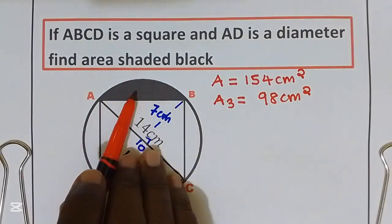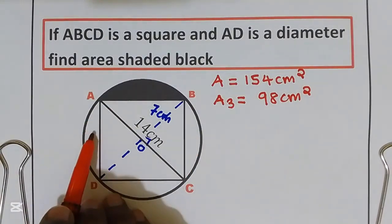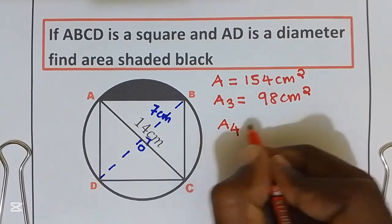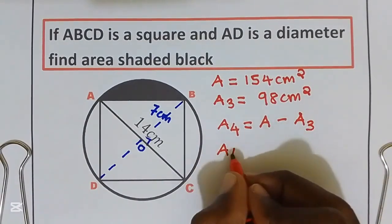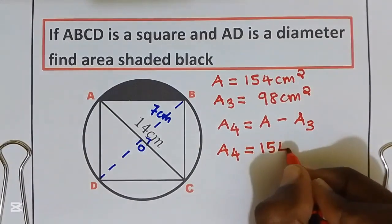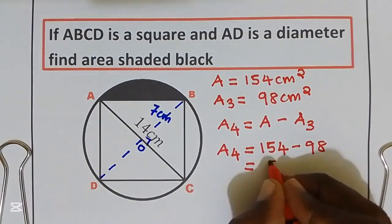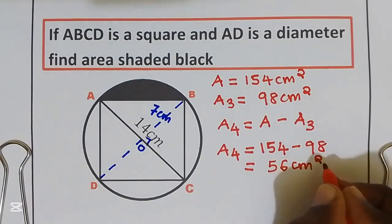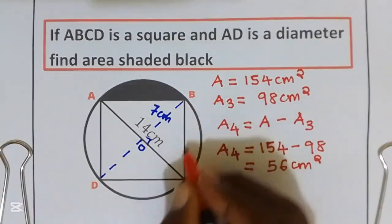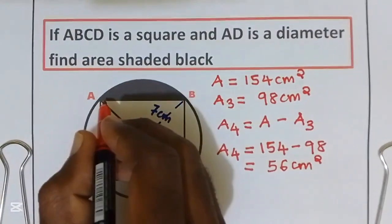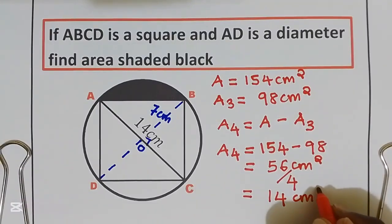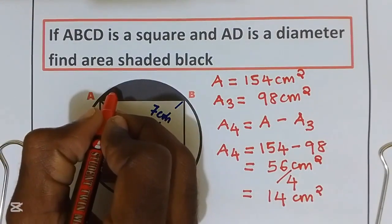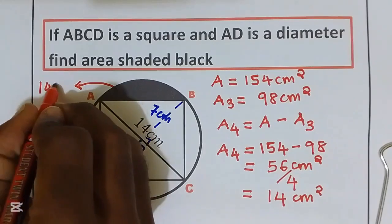To get this portion, this portion, this portion, and this portion, we call it Area 4. Area 4 is equal to Area 1 take away Area 3, which is 154 take away 98, giving us 56 centimeters squared. This Area 4 is the sum of all four portions painted black. If I divide this by 4, I get the area of one portion, which is equal to 14 centimeters squared. So the area painted black is 14 centimeters squared.